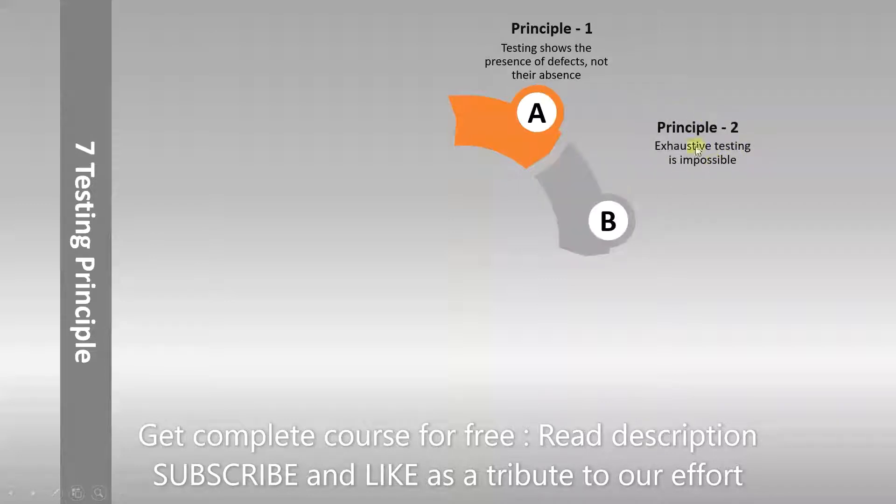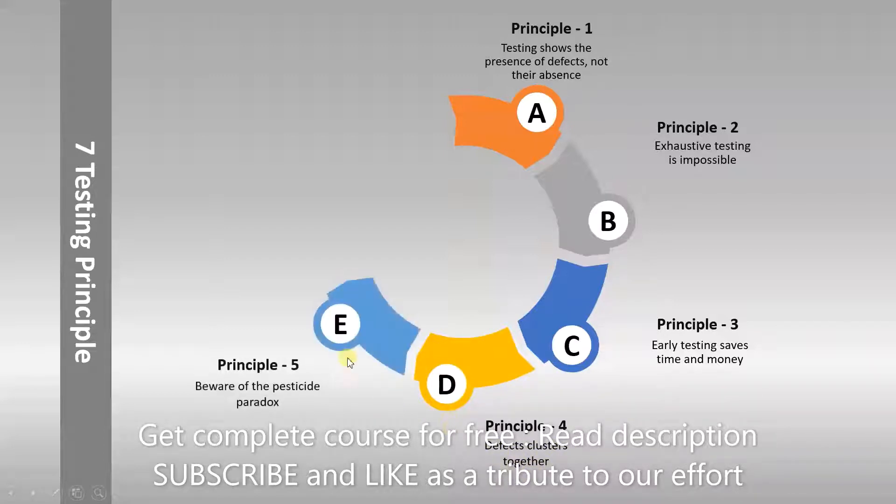The second principle is: exhaustive testing is impossible. The third principle is: early testing saves time and money. The fourth one is: defects cluster together. The fifth one is: beware of the pesticide paradox.